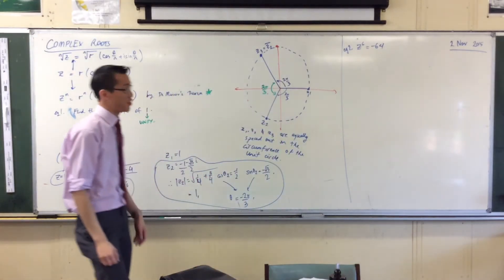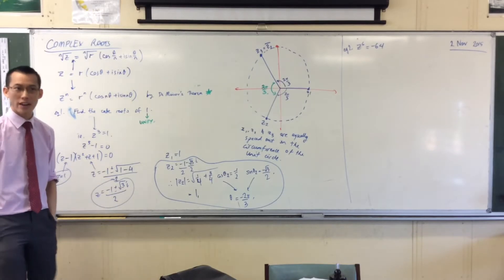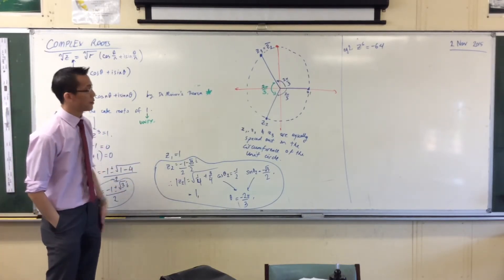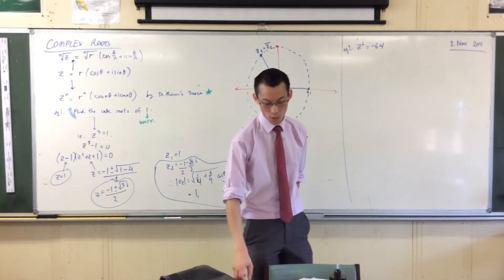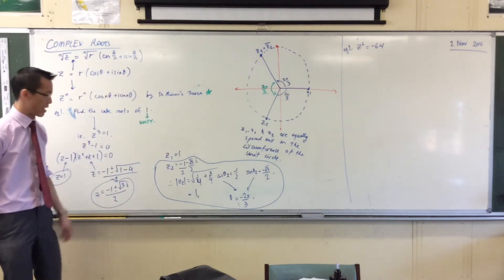I'm actually not going to solve this question immediately. I'm going to use this as a way to demonstrate that we need a better way to solve than rectangular form. Let's look at z to the 6 equals negative 64.